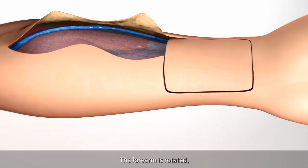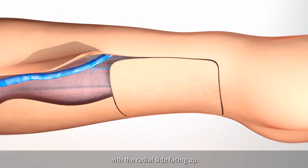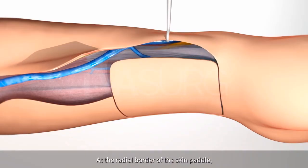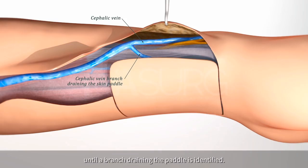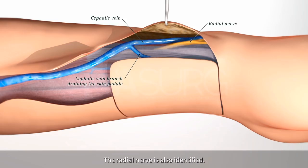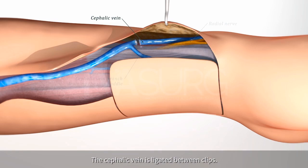The forearm is rotated with the radial side facing up. At the radial border of the skin paddle, the cephalic vein is traced distally until a branch draining the paddle is identified. The radial nerve is also identified. The cephalic vein is ligated between clips.